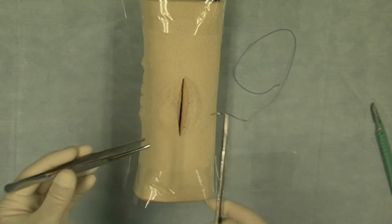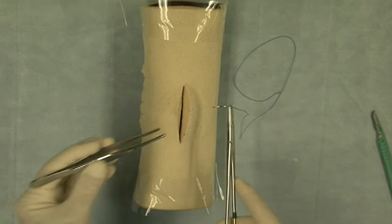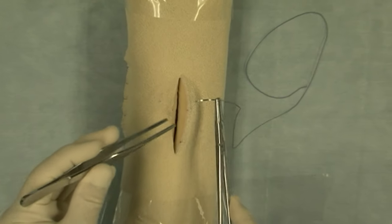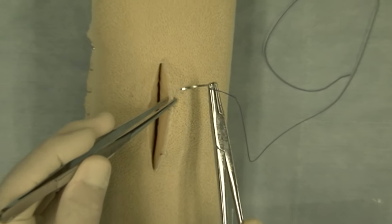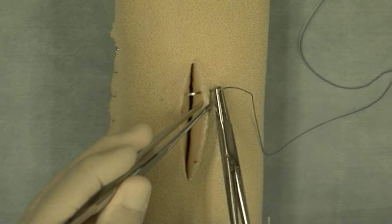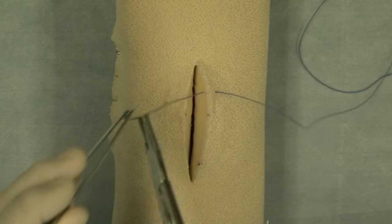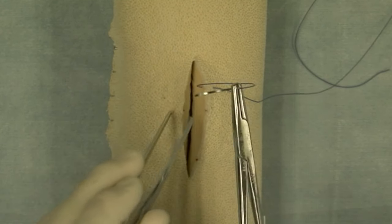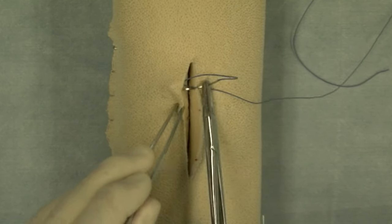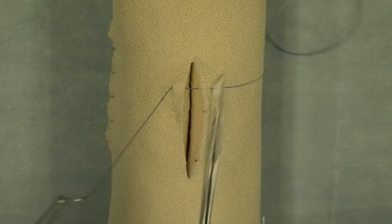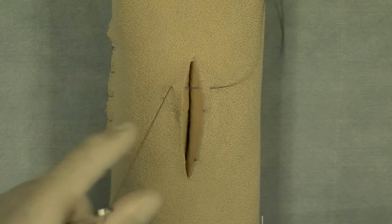We'll be demonstrating the cruciate suture pattern. This is an interrupted suture pattern. First part: bite on the near portion of the incision, far portion of the incision, reset my needle, pull my suture through.